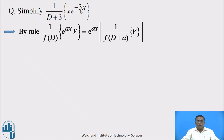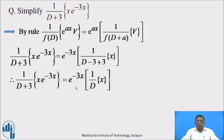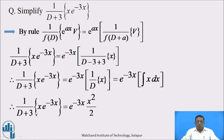Here v means x and a means -3. Therefore, 1/(D+3) operated on x·e^(-3x) can be written as e^(-3x) times 1/(D-3+3) operated on x. In the denominator, -3+3 gets cancelled. Therefore, this equals e^(-3x) times 1/D operated on x. Since 1/D stands for integration, this equals e^(-3x) times the integral of x dx, which is x²/2. So the answer is e^(-3x)·x²/2.